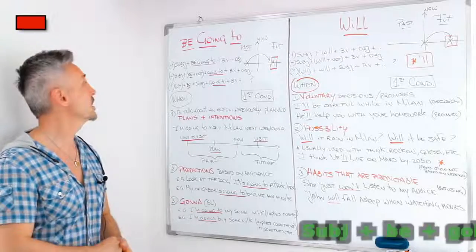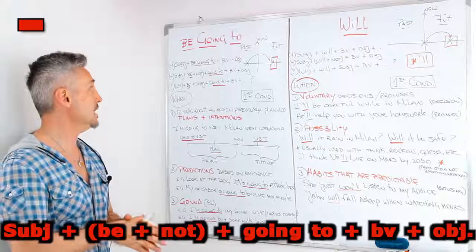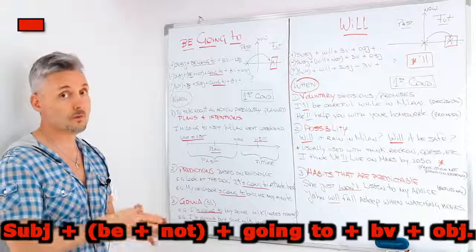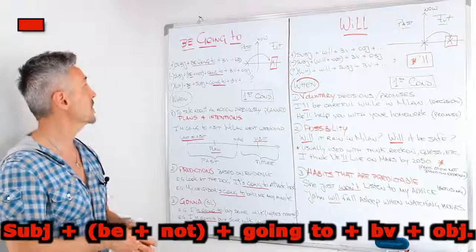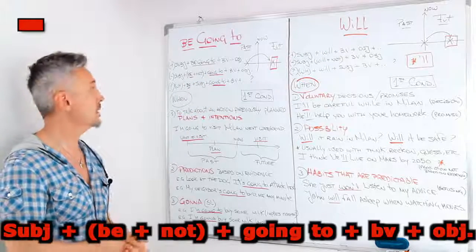For a negative sentence you need the subject first, obviously, then you need be plus not, so the verb to be plus not, then you need going to, then the base of the verb.